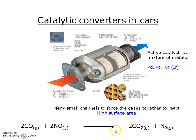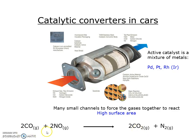This is the main equation you need to recall from the catalytic converter, where carbon monoxide, which is toxic, reacts with nitrogen oxide to form carbon dioxide and nitrogen. Although carbon dioxide is a greenhouse gas, it is less hazardous to human health than carbon monoxide and nitrogen monoxide. Remember, nitrogen itself is not a greenhouse gas.